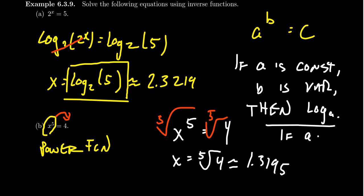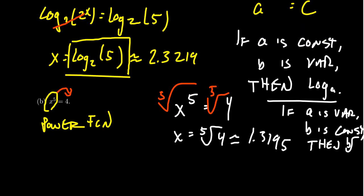if a is the variable and b is the constant, then in that situation, you're going to use the bth root. So use radicals versus logarithms. It's an important distinction to remember.